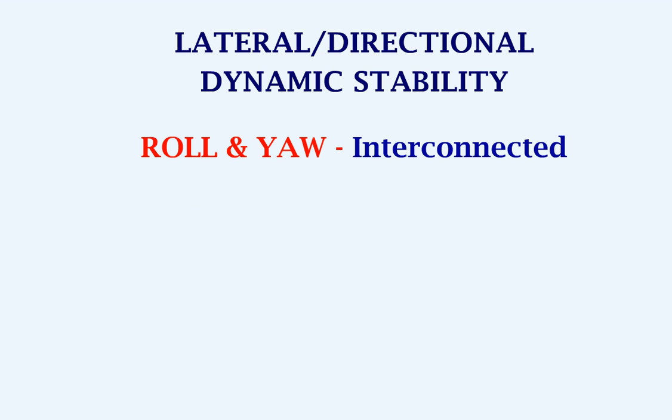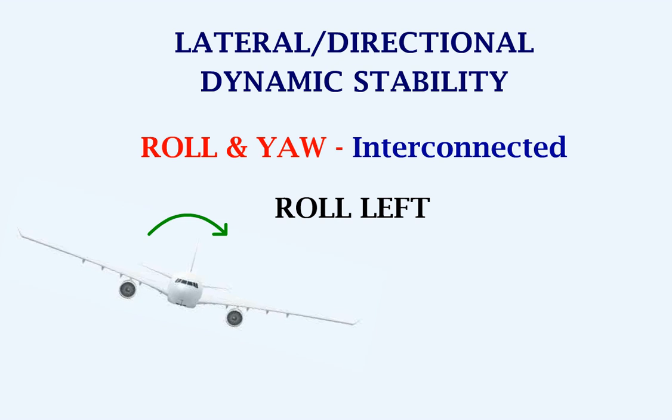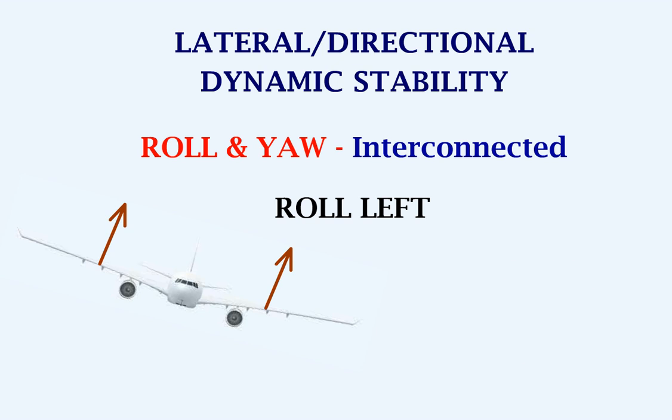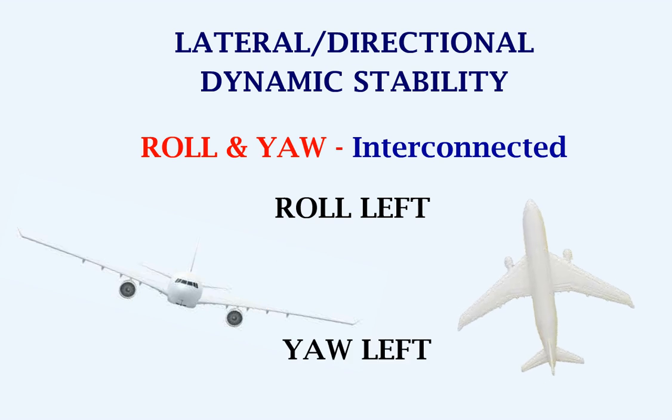In a similar case, if the aircraft rolls towards the left, the lift vector gets tilted towards the left, so the aircraft will automatically yaw towards the left.